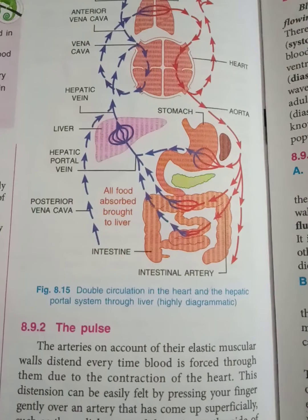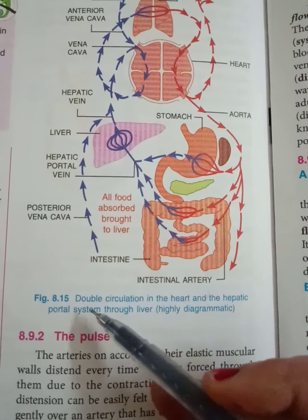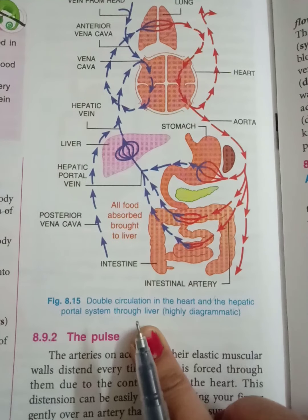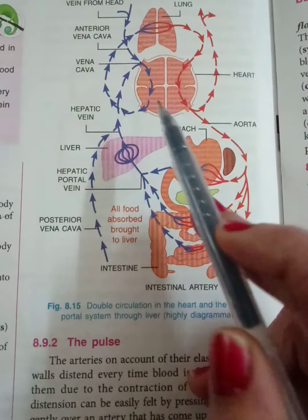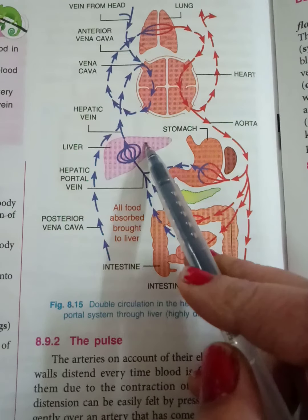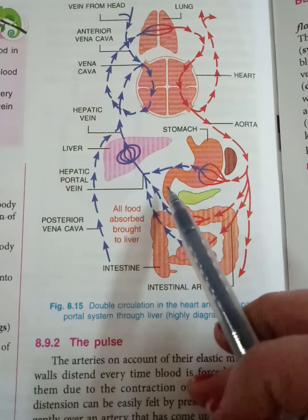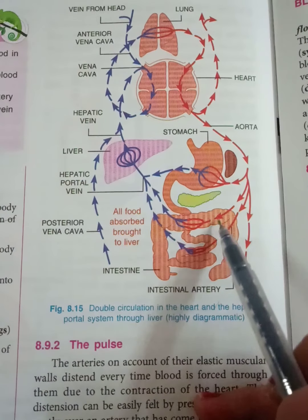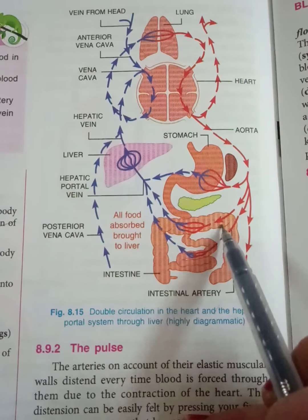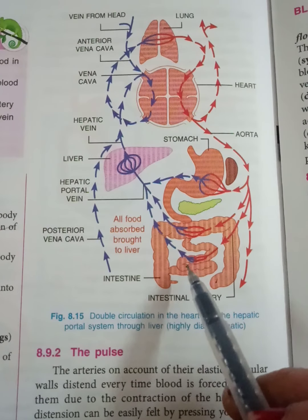Good morning children. This is page number 106, Figure 8.15, showing double circulation in the heart and the hepatic portal system through the liver. You can see the heart with four chambers shown here. We have the liver — the largest gland of the body — stomach, small intestine, pancreas, large intestine: ascending colon, transverse colon, and descending colon.